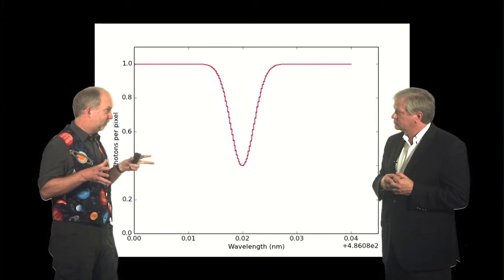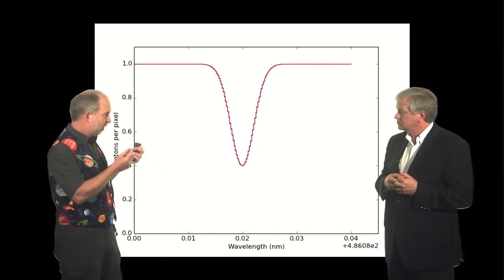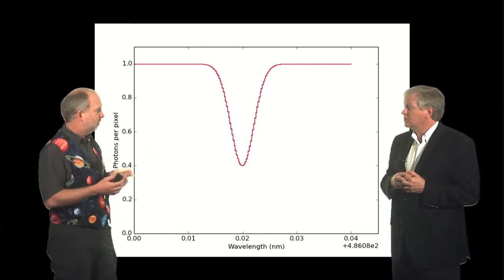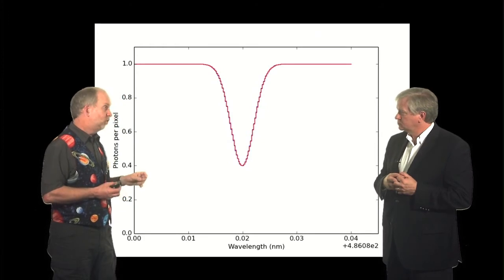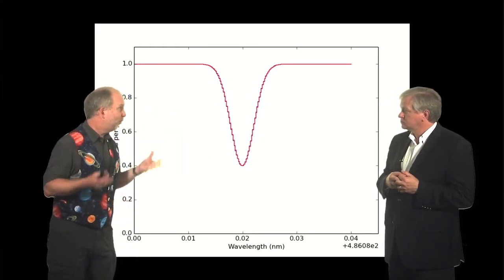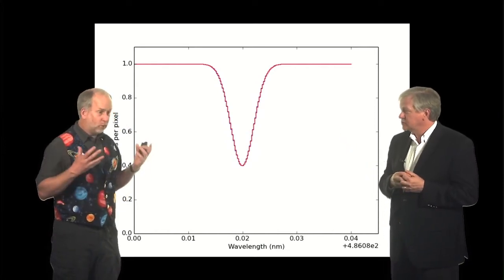I mean, one advantage is the shift does not depend on how nearby the star is. The sideways shift gets smaller the further away something is, but this thing, it doesn't matter how far away the star is, the shift is going to be the same. A second advantage is you don't just have one absorption line in the star, you get thousands of the things. Oh, so you can average over many, many thousand. So that gives you a big advantage.